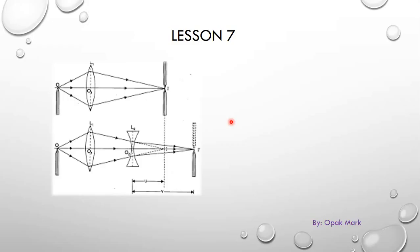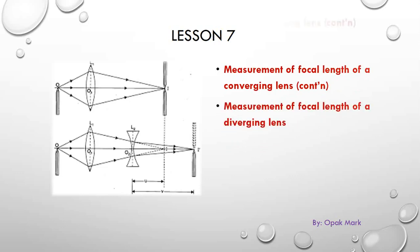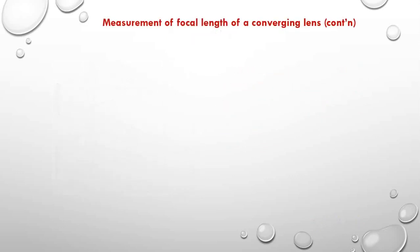Hello, welcome to lesson 7. In this lesson, we are going to continue looking at the measurement of the focal length of the converging lens or convex lens. And then we shall also look at the measurement of the focal length of a diverging lens or the concave lens. Let's begin by looking at the measurement of the focal length of a converging lens using the displacement method, which is method 6.